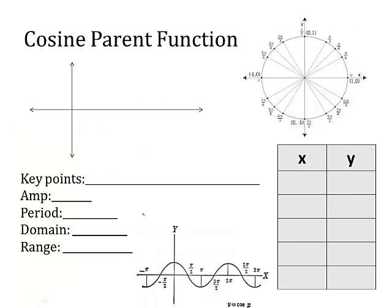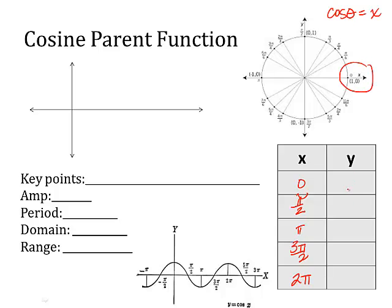Now, cosine. We're going to do similar steps, this time looking at cosine. Remember, cosine of theta is talking about the x-coordinate. We're going to use the same five angles: zero, pi over two, pi, three pi over two, and two pi. Now we're just looking at the x-coordinate. So at zero, my x-coordinate is one. At pi over two, my x-coordinate is zero. At pi, the x-coordinate is negative one. At three pi over two, the x-coordinate is zero. And at two pi, the x-coordinate is back to one.